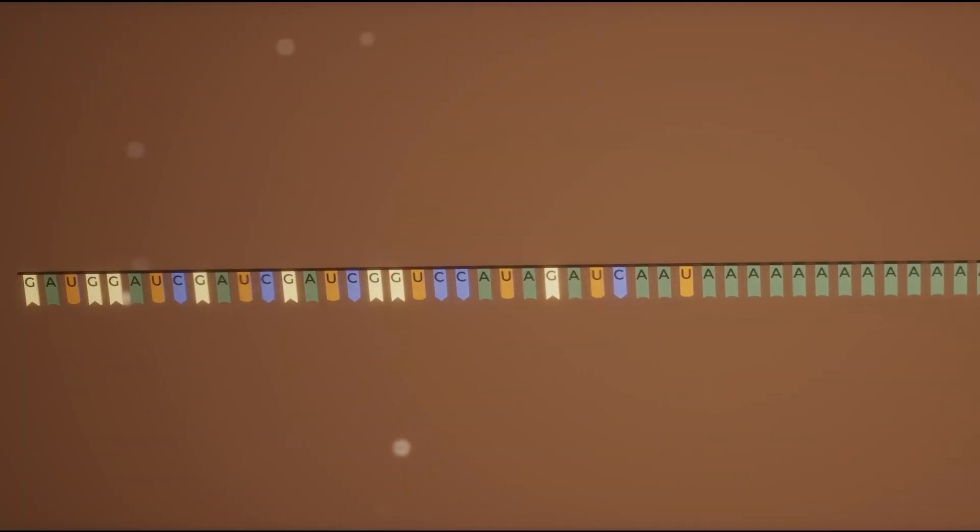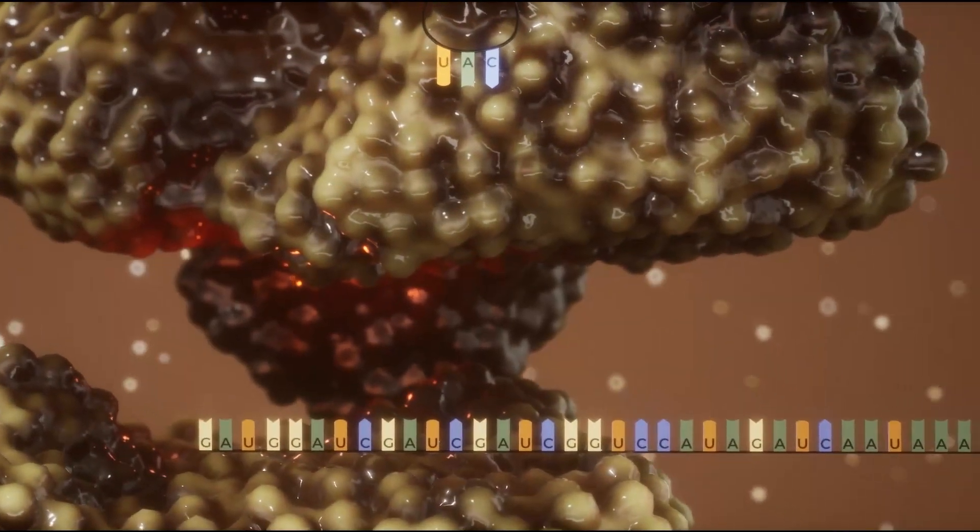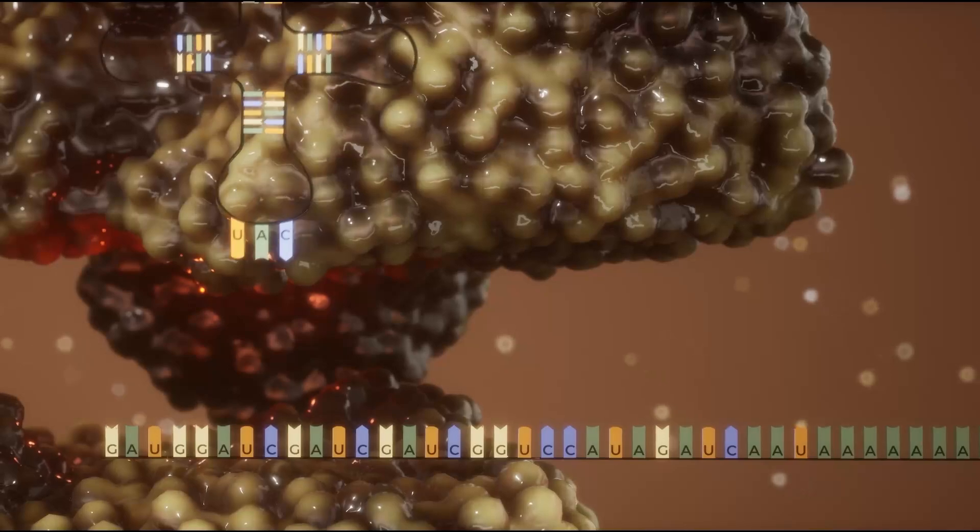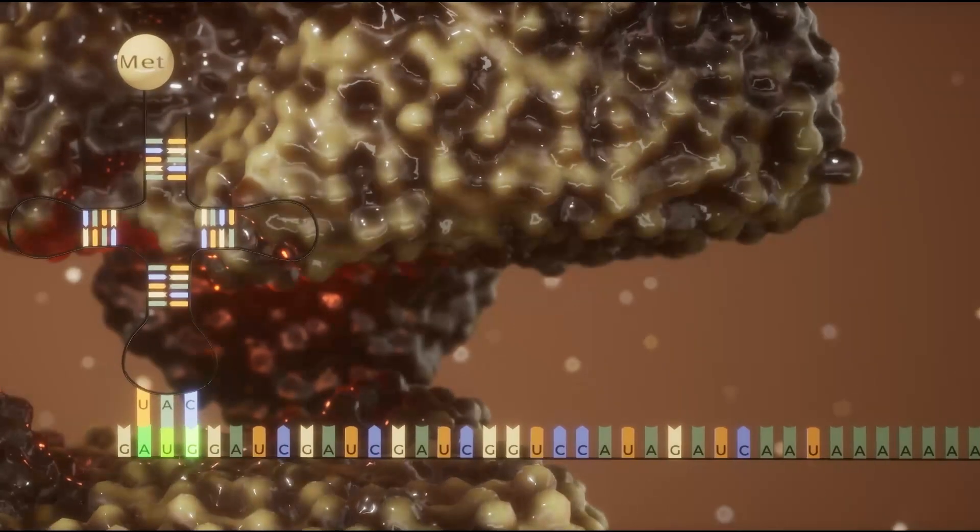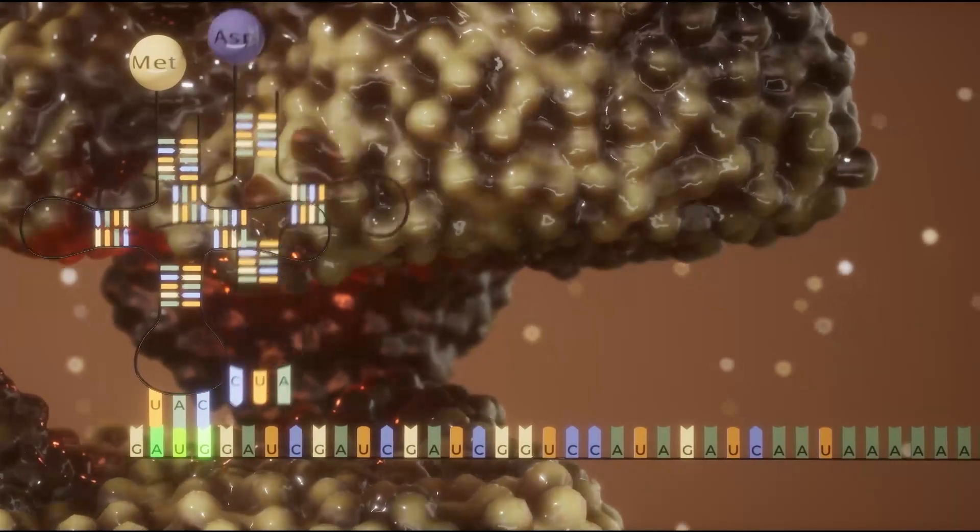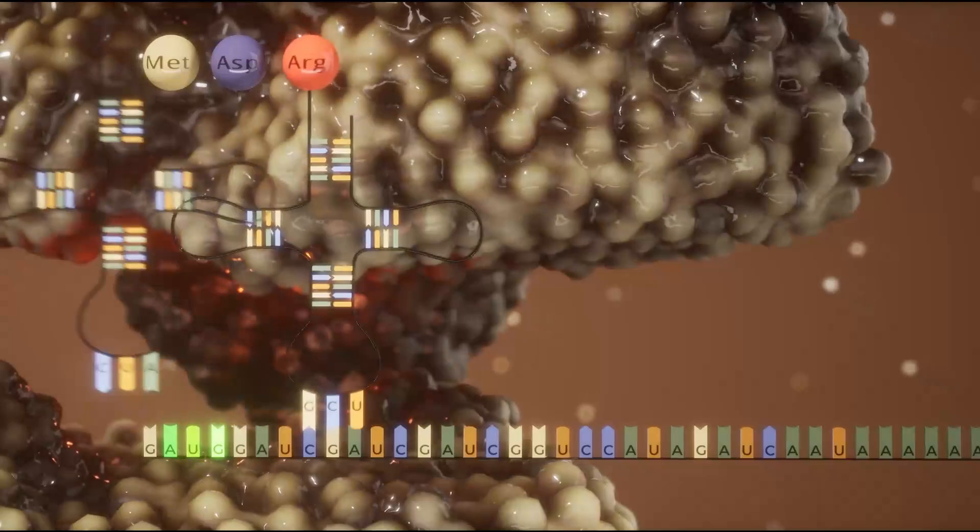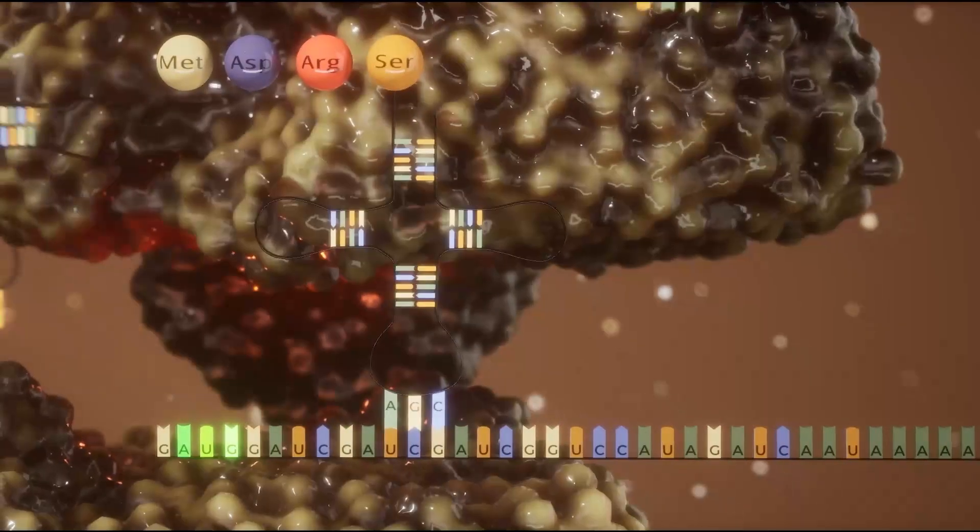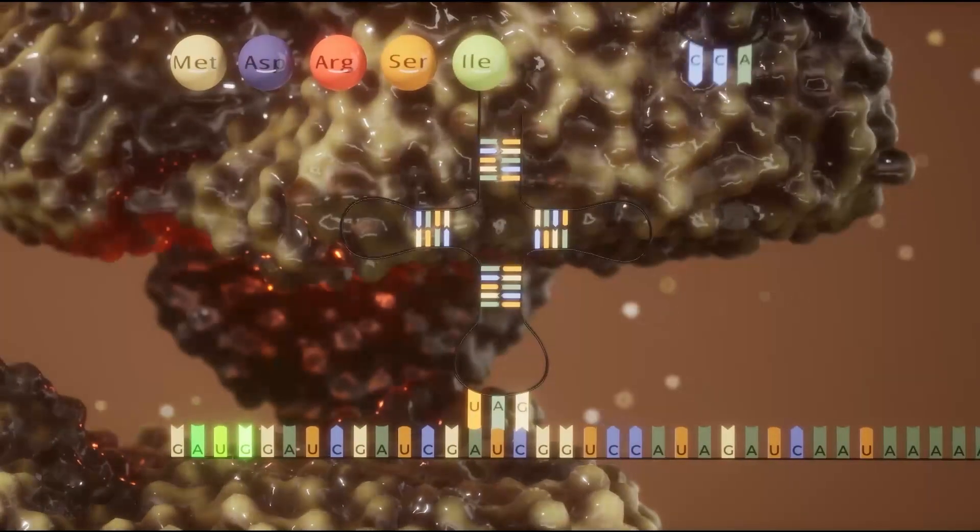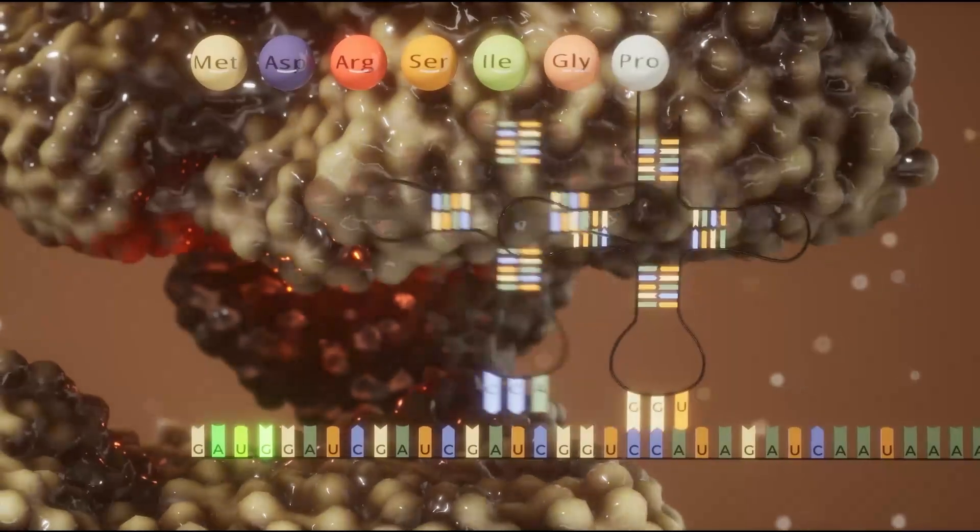This simulation helps students grasp the connection between big ideas across biology. When students move the first tRNA with an amino acid to the start codon to initiate the translation process, they can better understand how gene regulation controls the overall production of proteins during translation.